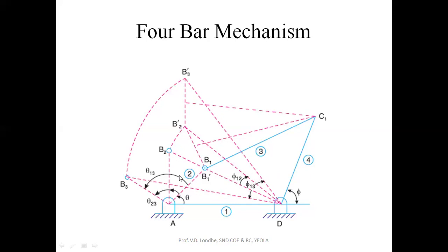After plotting the second and third positions of the crank, we have to join B2 to D — the second position of the crank — and B3 to D — the third position of the crank. Then with reference to these lines B3D and B2D, we have to take the output angle for the second position as well as the output angle for the third position.